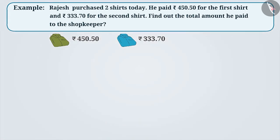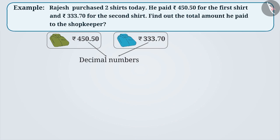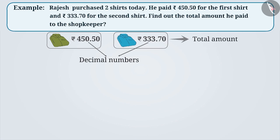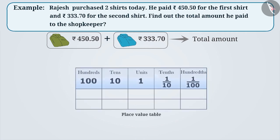From the given example, it is clear that Rajesh purchased the first shirt for Rs. 450 and 50 paise and the second shirt for Rs. 333 and 70 paise. Here we can see both the numbers are decimal numbers. To know the total amount he paid to the shopkeeper, we need to add these two numbers. To add them, first arrange them in the place value table.